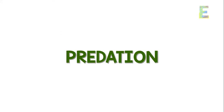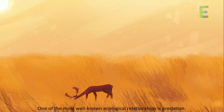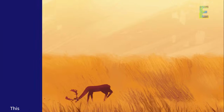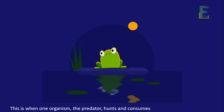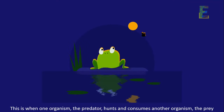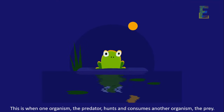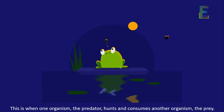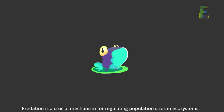Predation: one of the most well-known ecological relationships is predation. This is when one organism, the predator, hunts and consumes another organism, the prey. Predation is a crucial mechanism for regulating population sizes in ecosystems.